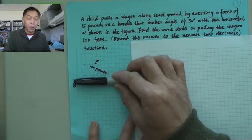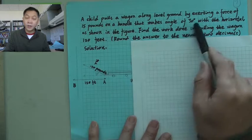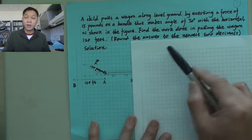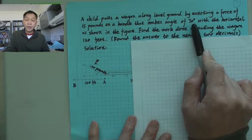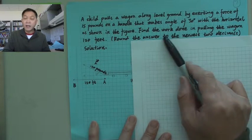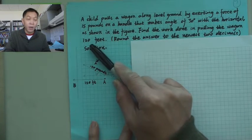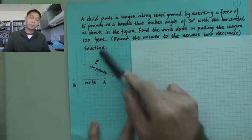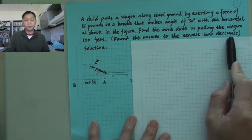The handle makes 30 degrees with the horizontal ground — that is given. For calculation purposes, we assume 30 degrees. We need to find the work done in pulling the wagon 120 feet, and round the answer to the nearest two decimals.